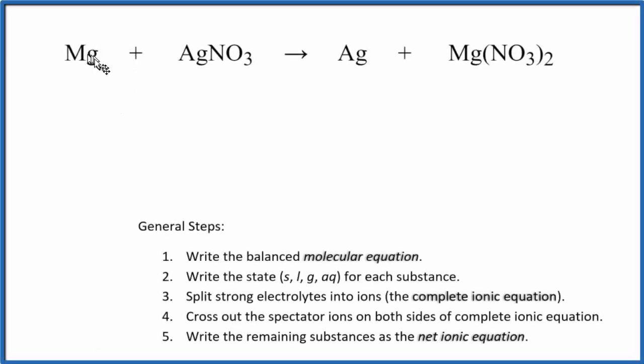So to write the net ionic equation for Mg plus AgNO3, magnesium plus silver nitrate, let's first see if this reaction is even going to happen. This is a single displacement reaction. So we'd expect the magnesium would come in and push the silver out so the silver's by itself, then the magnesium's bonded to the nitrate, which we see right here.